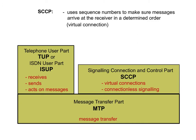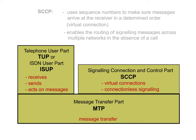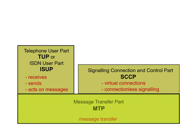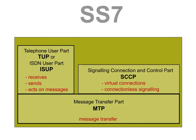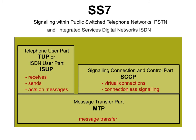SCCP also enables the routing of signalling messages across multiple networks in the absence of a call. This layer structure, consisting of MTP and ISUP, as well as SCCP, represents the SS7 protocol, which is the protocol used for signalling within public switched telephone networks and ISDN networks.